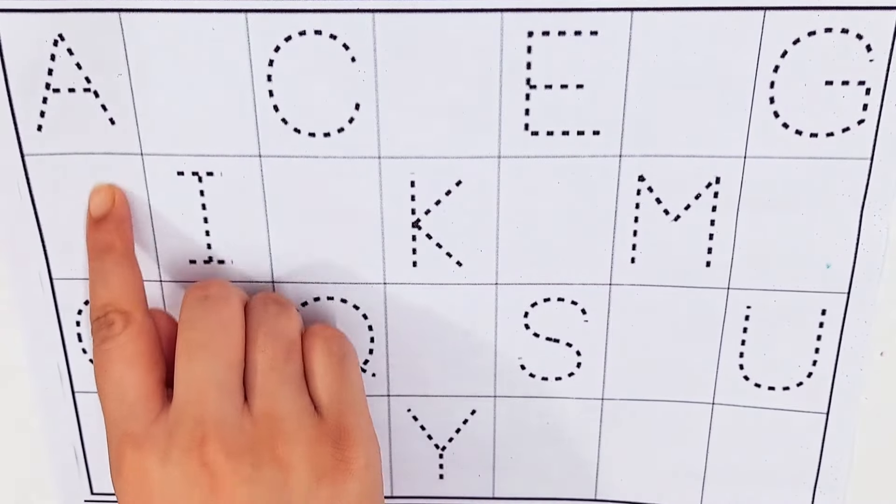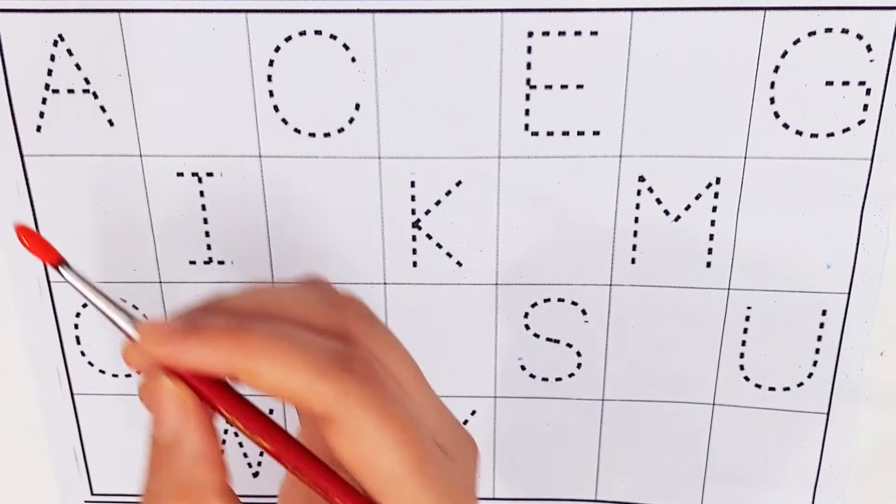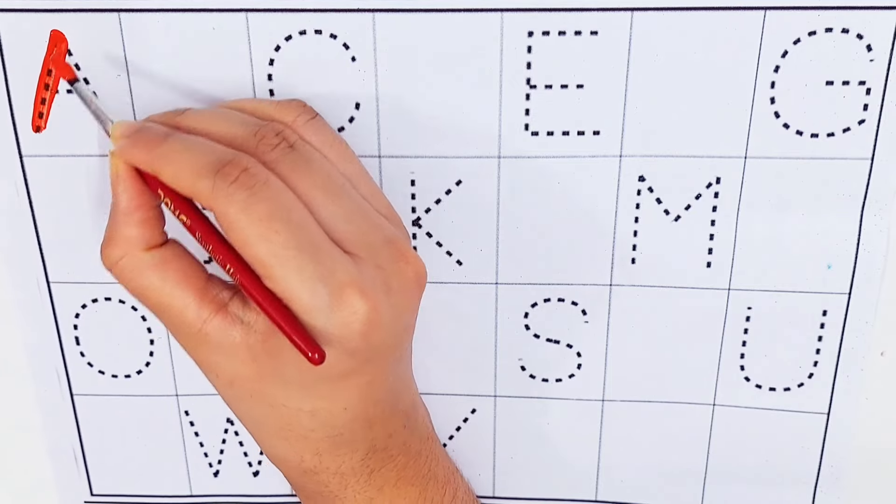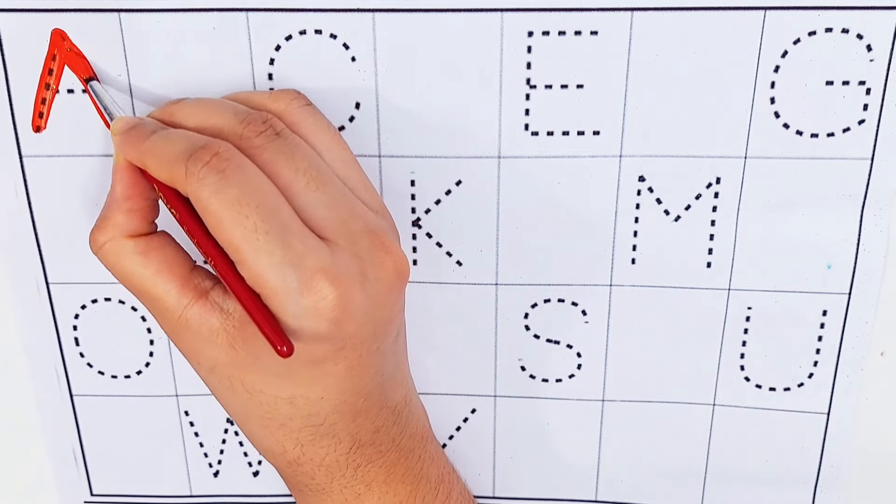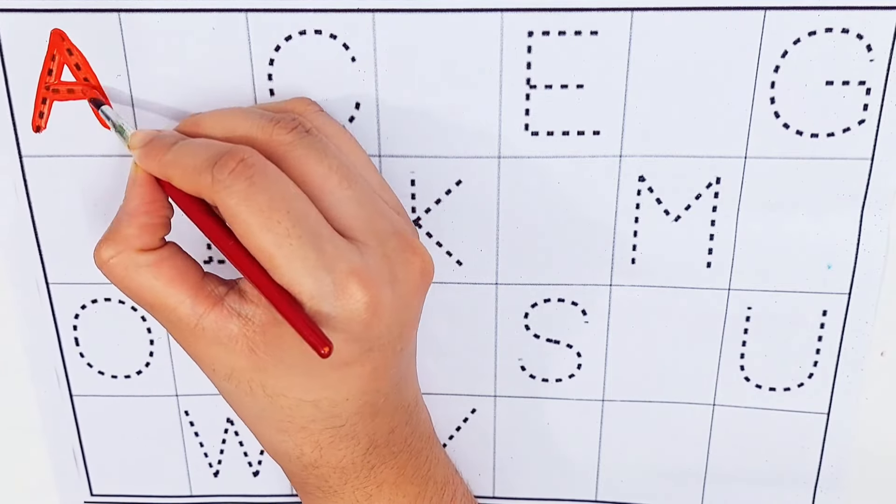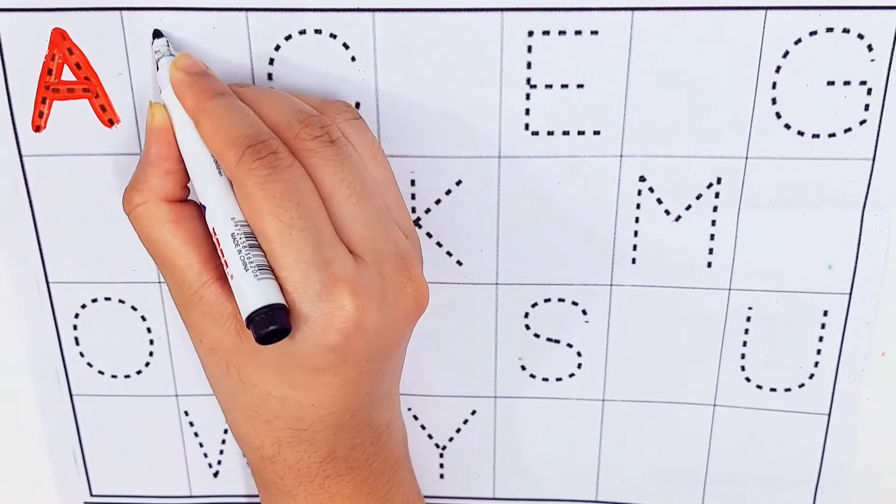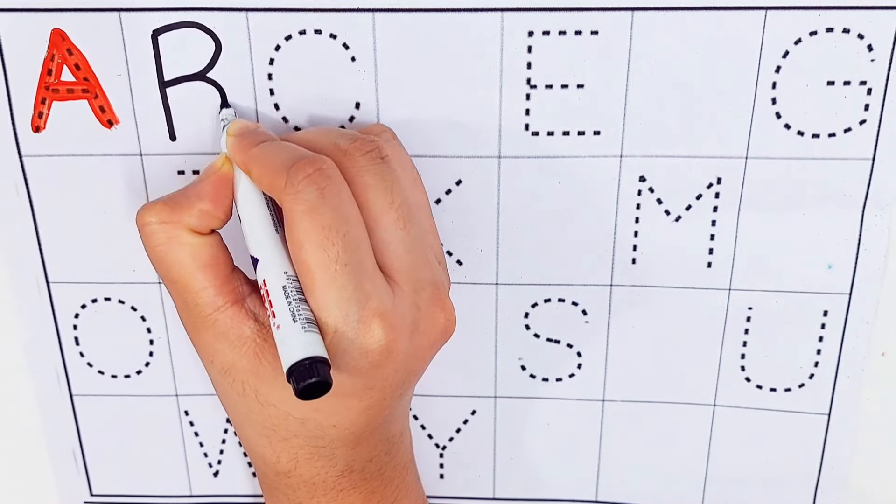Let's try to learn some alphabets. A. A for Arrow. B. B for Bus.